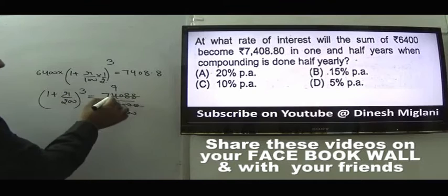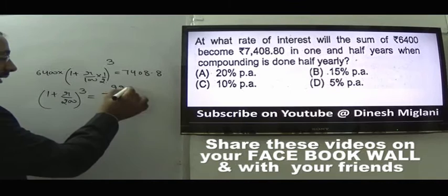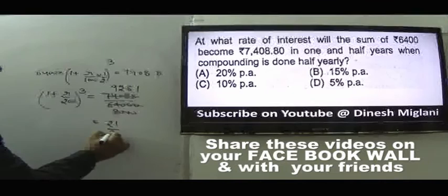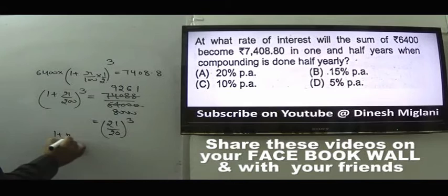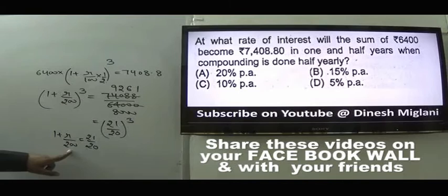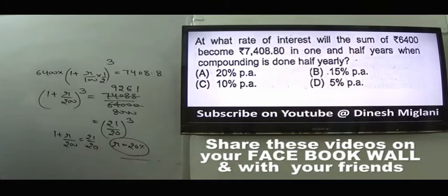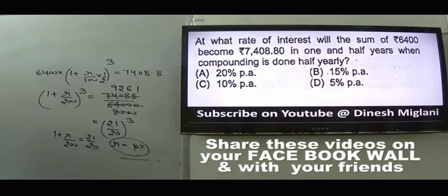From (1 + r/200) = 21/20, solving: if r = 10, then 1 + 10/200 = 1 + 1/20 = 21/20. So r = 10%, option C.